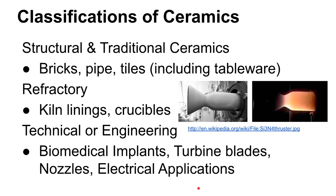Ceramics are among the most advanced engineering materials we have today, and also among the oldest. The chemistry is complex, but we've been able to use ceramics basically out of dumb luck for thousands of years. Uses range from structural and traditional ceramics — whiteware, porcelain, bricks, terracotta pipe — to biomedical implants, turbine blades, electronics components, and machining inserts.